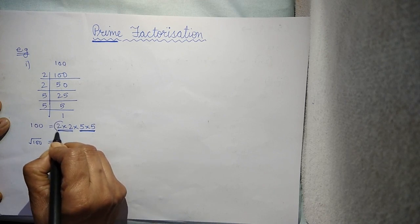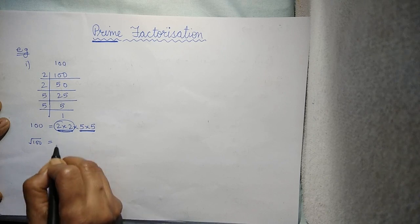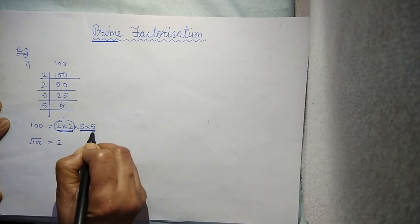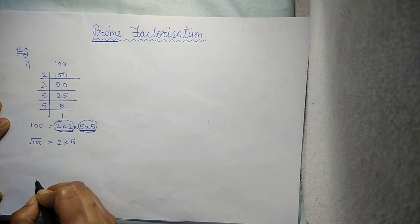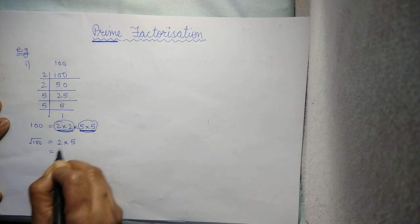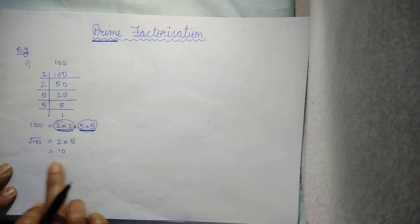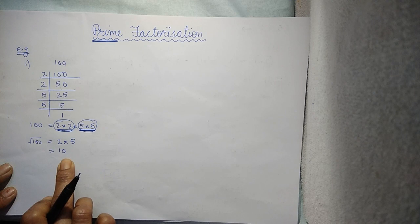Out of this pair, you will write only one number. 2 into 5 is 10. So, the square root of 100 is 10.